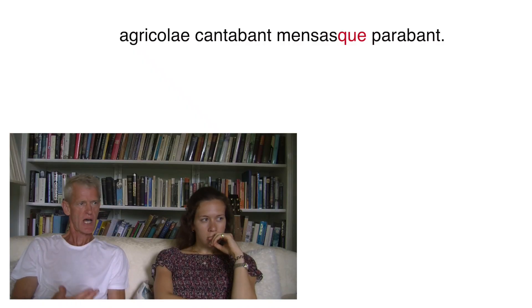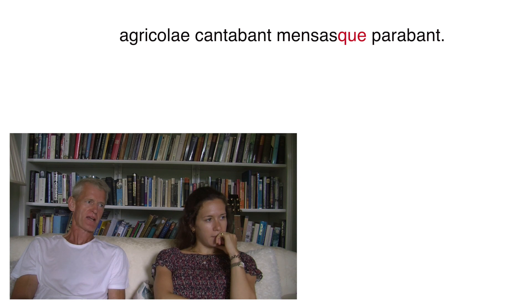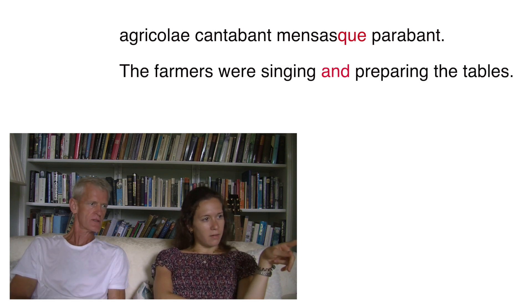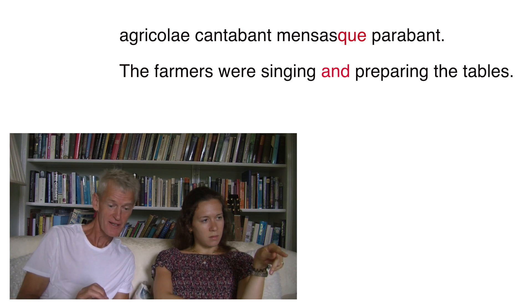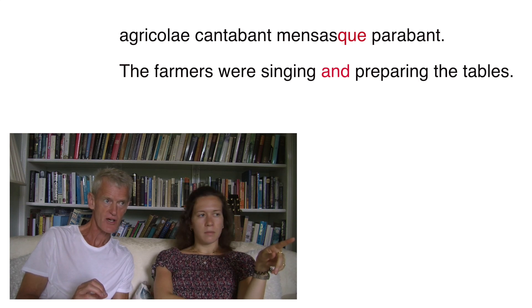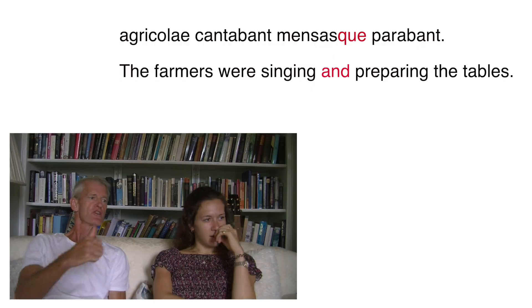Que can be used to join nouns together, and it can also be used to join clauses together. For example, 'agricolae cantabant mensasque parabant' — the farmers were singing and were preparing the tables. Izzy correctly identifies that 'mensas' is accusative plural. So que joins both nouns and whole clauses, and you pick it up, put it in front of the word it was joined onto, and translate it as 'and.'